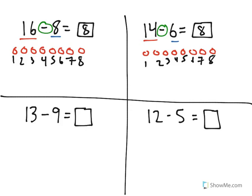Now some of these, it's actually kind of easy to think about. 13 take away 9. Well, if I started with 13 and I took away 9 of them, I know that there's only 4 numbers in between.